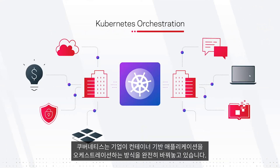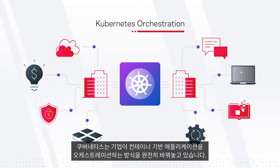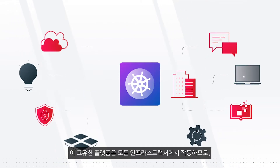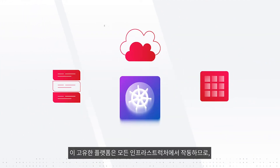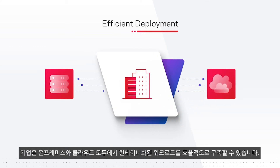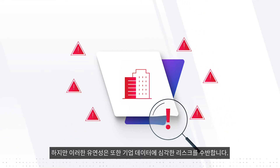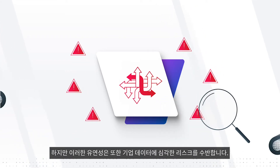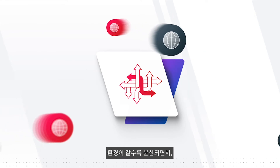Kubernetes is transforming the way enterprises orchestrate their container-based applications. This unique platform adapts to any infrastructure, allowing organizations to efficiently deploy containerized workloads on-prem and in the cloud. But with this versatility also comes significant risk to business data, as environments become increasingly dispersed.